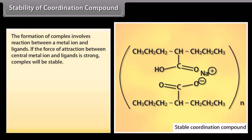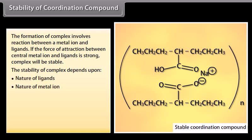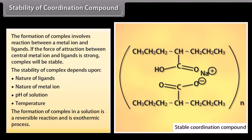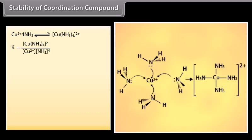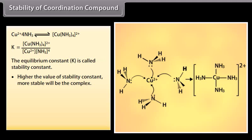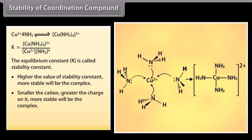Stability of Coordination Compounds: The formation of a complex involves a reaction between a metal ion and ligands. If the force of attraction between the central metal ion and ligands is strong, the complex will be stable. Stability depends on the nature of ligands, nature of metal ion, pH of solution, and temperature. The formation of a complex in solution is a reversible, exothermic process. The equilibrium constant K is called the stability constant; a higher value means a more stable complex. A smaller cation with greater charge gives a more stable complex, and a stronger ligand also gives a more stable complex.